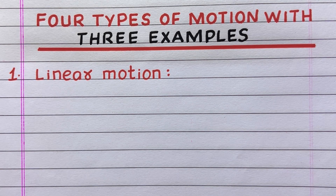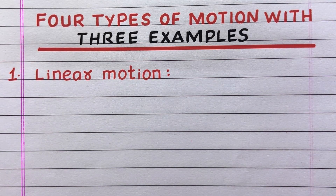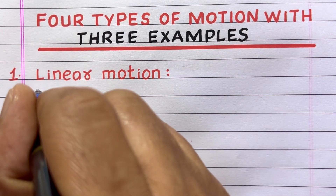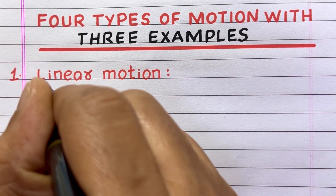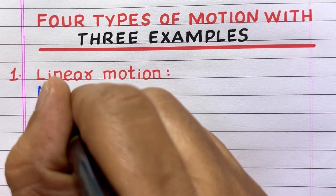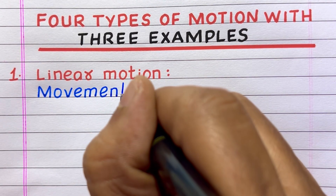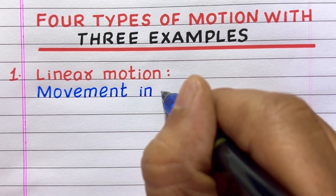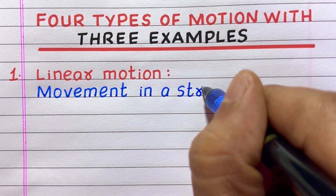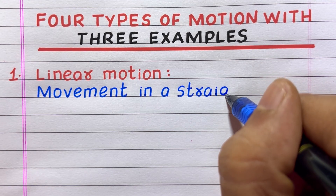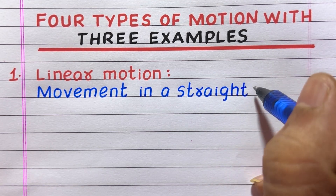Hello everyone, welcome to my channel 10 Lines Essay. In this video I'll write four types of motion with three examples. The name of the first type of motion is linear motion. Linear motion is a movement in a straight line.